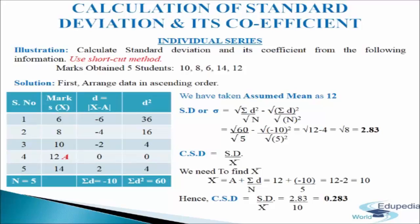We calculate standard deviation = √(σd²/n − (σd/n)²). Substituting the values we get SD = 2.83. For the coefficient of standard deviation we need the mean: mean = a + σd/n = 12 + (−10)/5 = 10. Then CSD = SD / mean = 2.83 / 10 = 0.283. This is how we calculate standard deviation and its coefficient using the shortcut method.